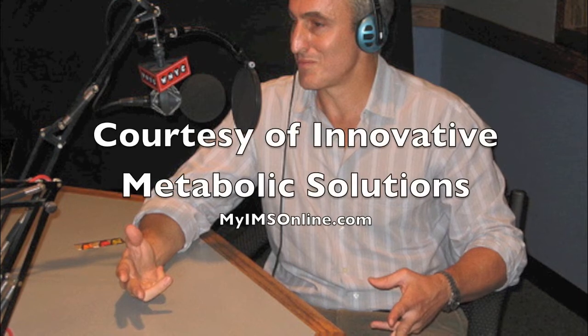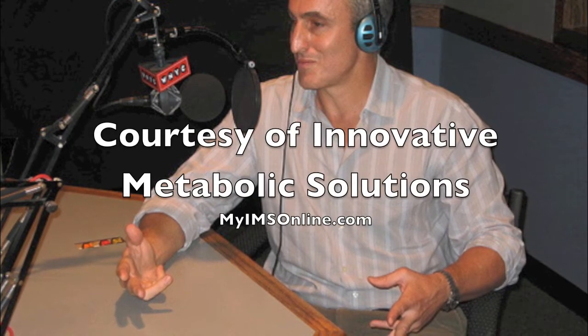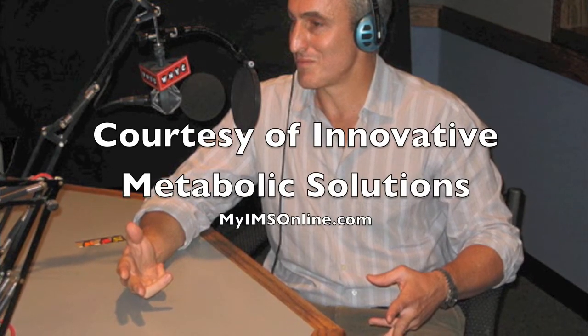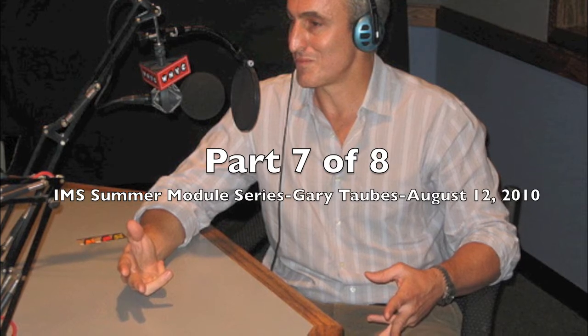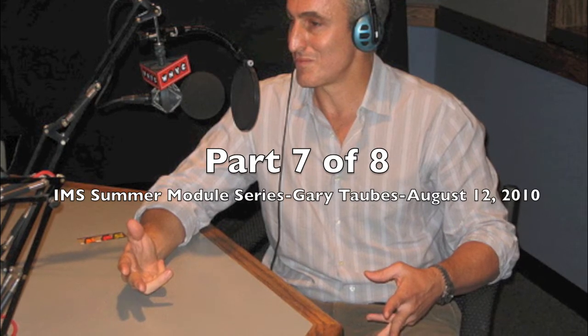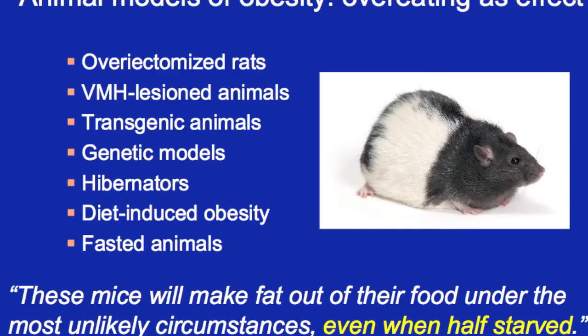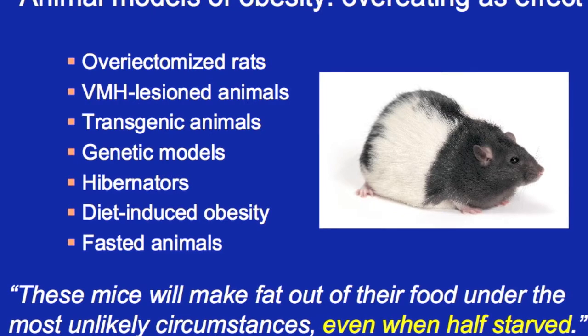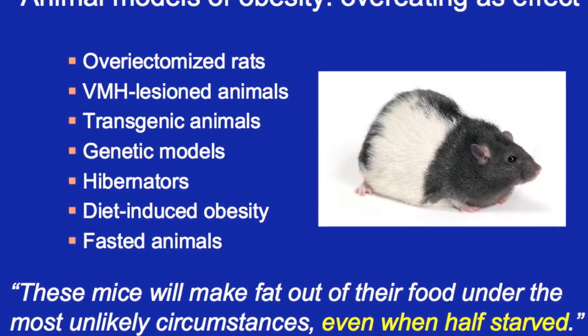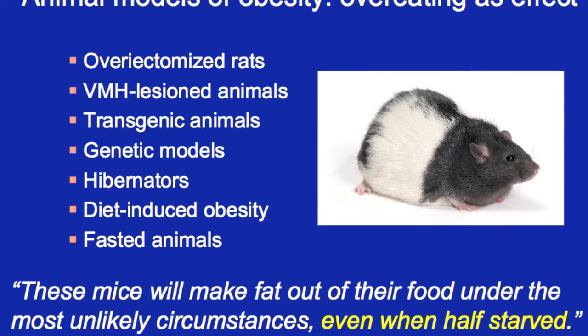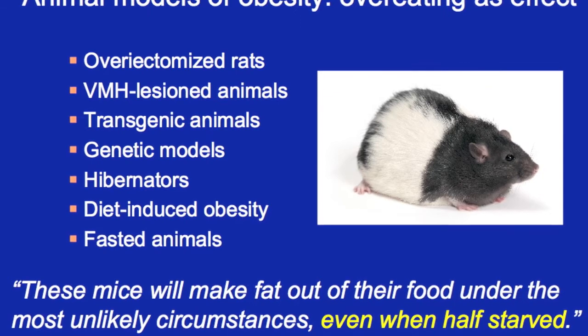John Mayer, who studied a strain of genetically obese mice at Harvard in the 50s, said these mice will make fat out of their food under the most unlikely circumstances, even when half starved. And right here you start to see the answer to that question of obesity and malnutrition coexisting in the same population.